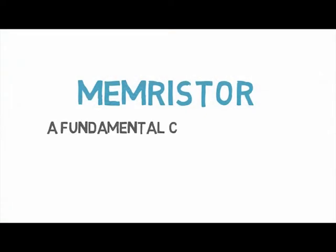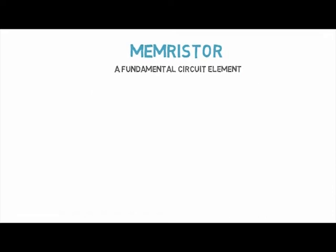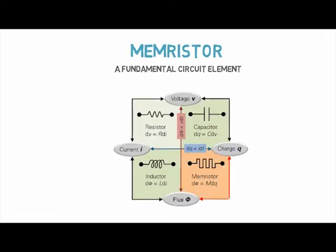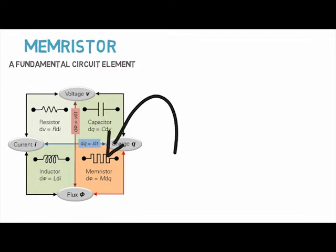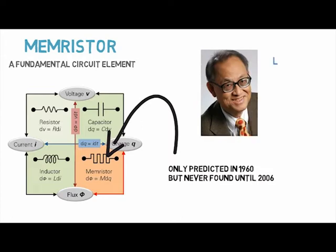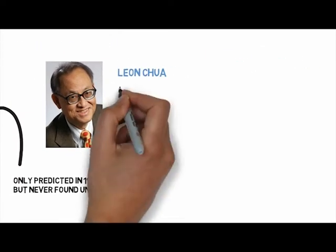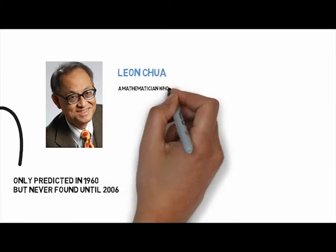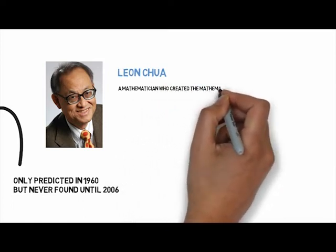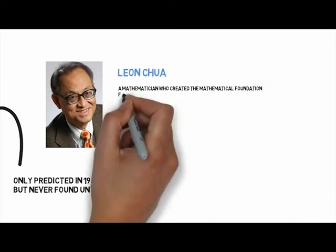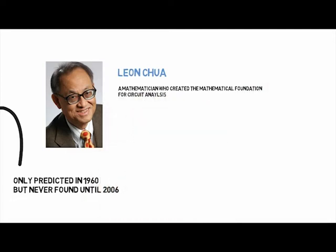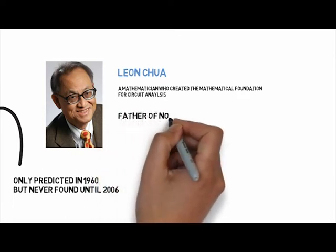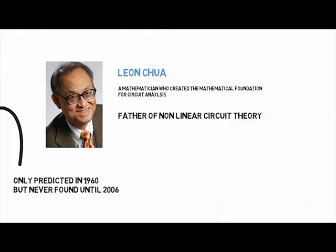The memristor is actually the fourth fundamental passive circuit element. For about 200 years we've known about three passive circuit elements: the resistor, the capacitor, and the inductor. In the 1960s there was a mathematician at UC Berkeley named Leon Chua. Leon Chua is to circuit theory what Albert Einstein was to relativity. He was the first person to put nonlinear circuit theory on a firm mathematical foundation — he is known as the father of nonlinear circuit theory.